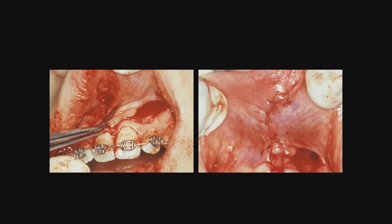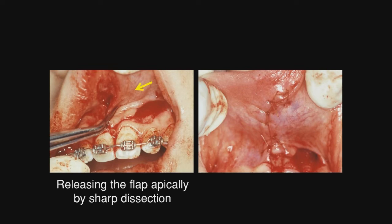You can see that we are now attempting to position the laterally positioned flap toward the mesial, but you want to go well up into the lip, split thickness-wise, releasing the flap apically by a very sharp dissection. Then I like to go ahead and, with interrupted sutures, close the apical aspect, and you can see we are beginning to position the flap mesially.